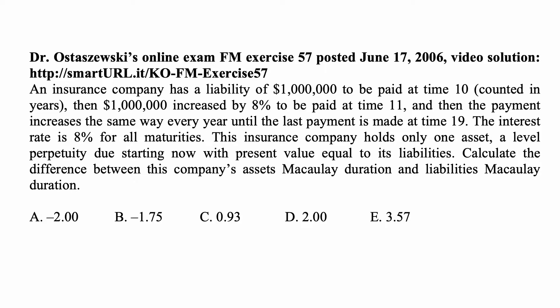Then $1 million increased by 8% to be paid at time 11, and then the payment increases the same way every year until the last payment is made at time 19. The interest rate is 8% for all maturities.